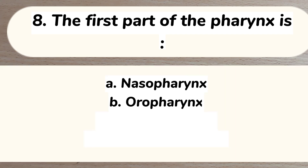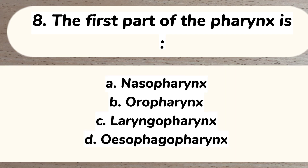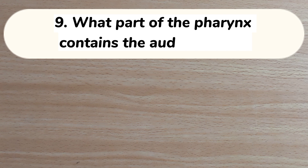Number 8. The first part of the pharynx is: A. Nasopharynx. B. Oropharynx. C. Laryngopharynx. D. Oesophageopharynx. Answer: A. Nasopharynx.